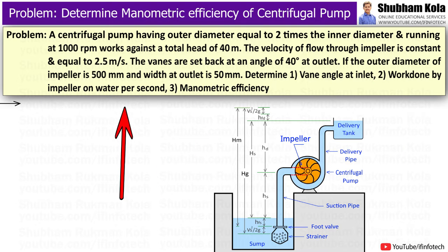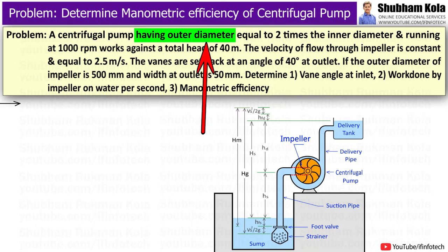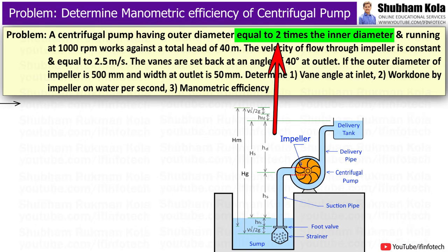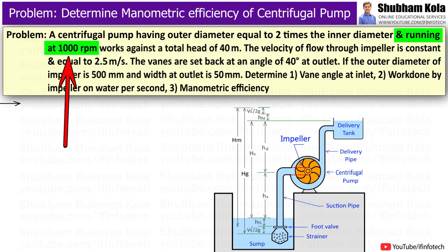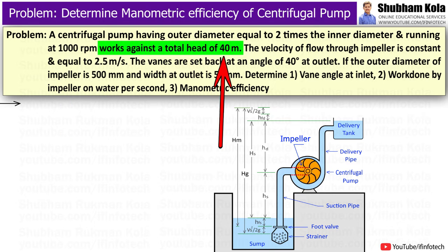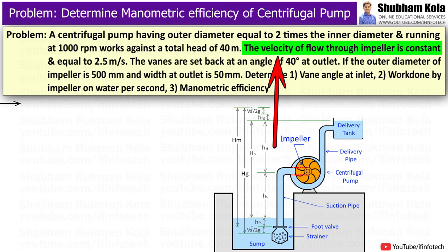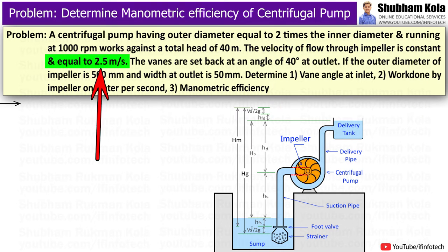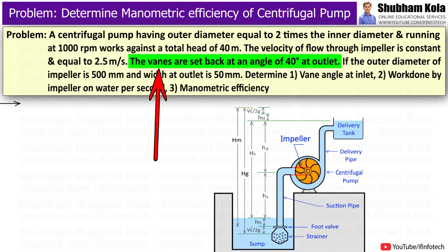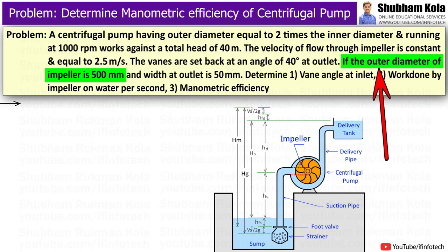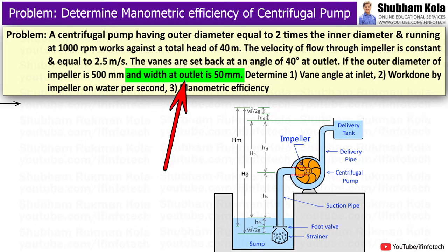The question is given as: a centrifugal pump having outer diameter equal to 2 times the inner diameter and running at 1000 rpm, works against a total head of 40m. The velocity of flow through the impeller is constant and equal to 2.5 m/s. The vanes are set back at an angle of 40 degrees at outlet. The outer diameter of the impeller is 500 mm and width at outlet is 50 mm.